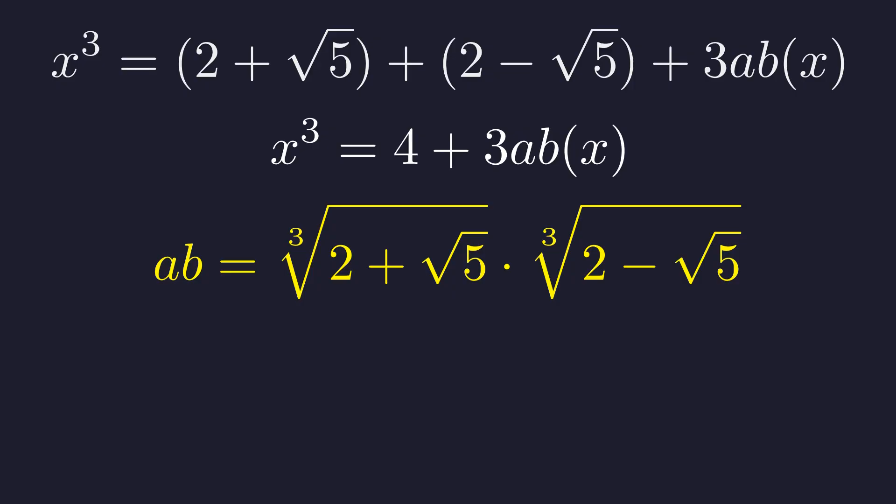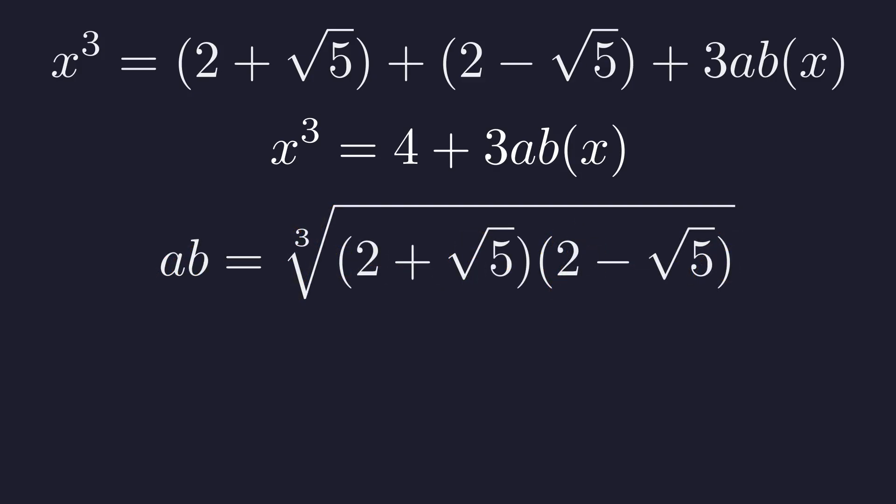It's a difference of squares pattern just waiting to be simplified. So we rewrite this as the cube root of the product. 2 plus root 5 times 2 minus root 5.